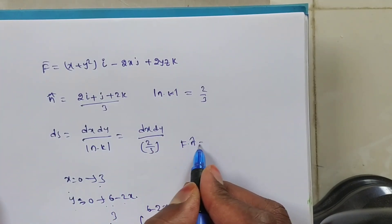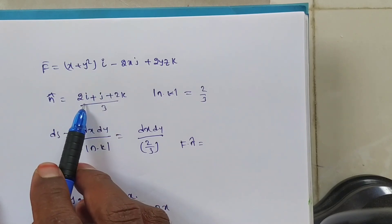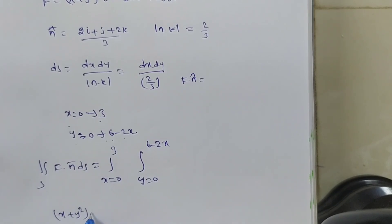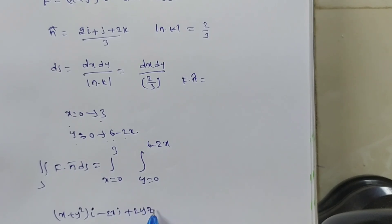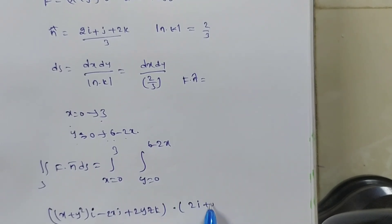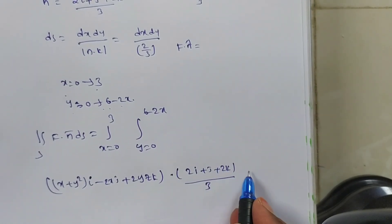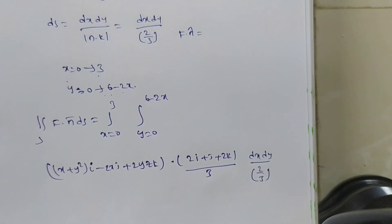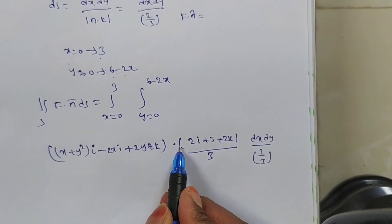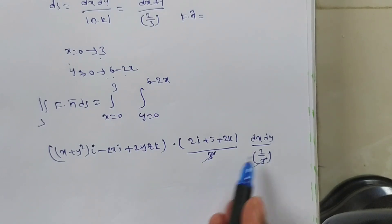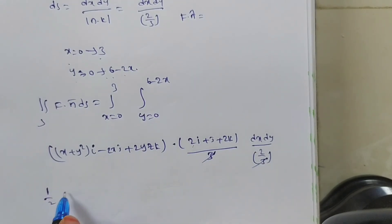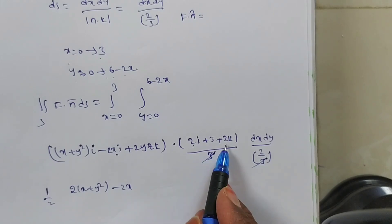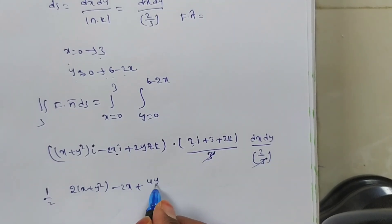Let us compute f̄·n̂ separately: (x + y²)i + (y − 2x)j + 2yzk  ·  (2i + j + 2k)/3, times dx dy / (2/3). Doing the dot product: 2(x + y²) + 1·(y − 2x) + 2·(2yz) = 2x + 2y² + y − 2x + 4yz. The 3 from n̂ and the 3 from dS cancel, leaving 1/2 times the dot product result.